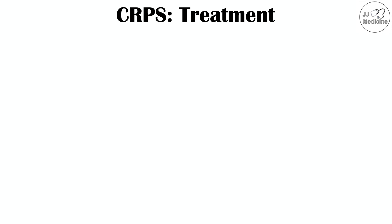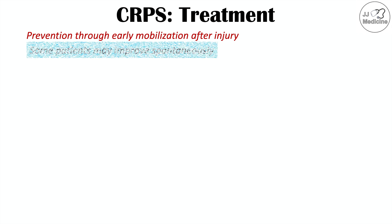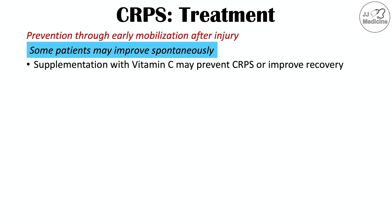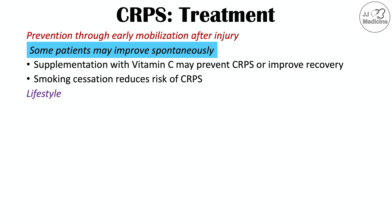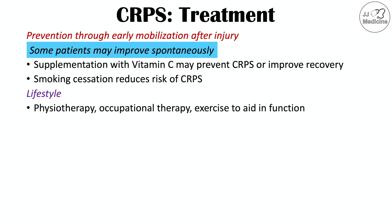Treatment begins with prevention: early mobilization after an injury can be very important. Vitamin C supplementation may prevent CRPS or improve recovery, and smoking cessation reduces risk. If a patient does develop the condition, they may improve spontaneously, though many require help with pain control and improving functionality. Treatment modalities include physiotherapy, occupational therapy, and exercise to aid in functioning.